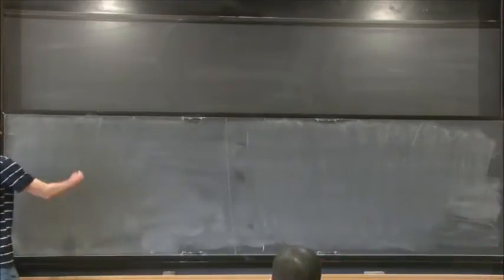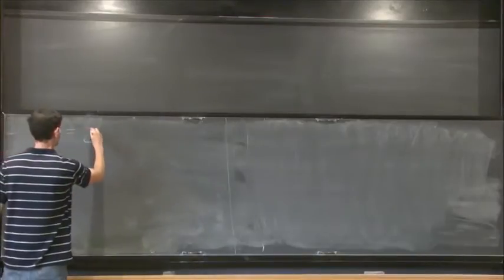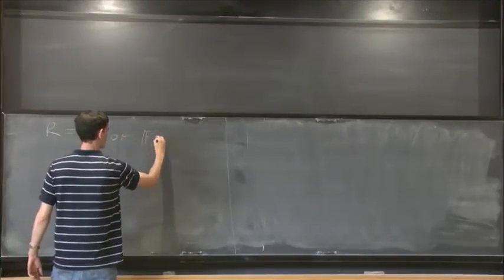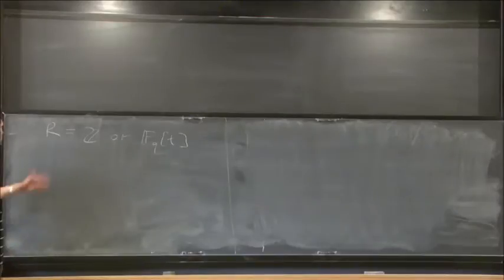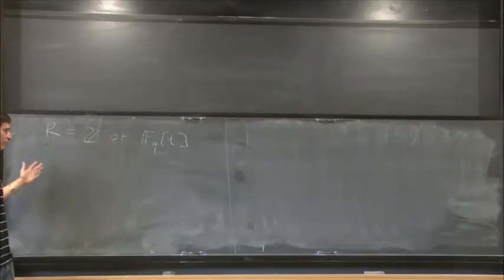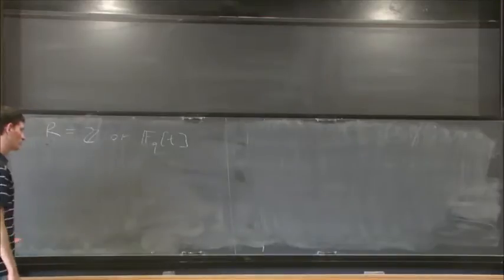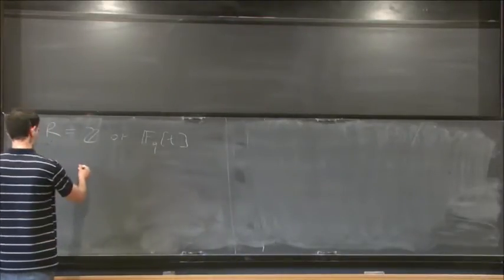Basically, we have some ring which, for this talk, you may assume is either Z or the polynomial ring over some finite field, or any more general order in a number field or function field. Now this ring has a natural size structure, so we can order Z by absolute value and F_q[t] by degree.